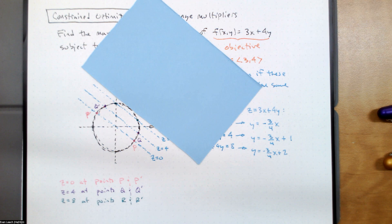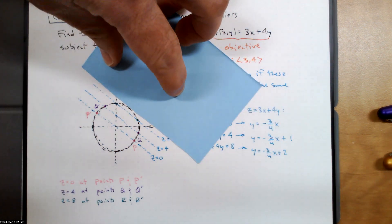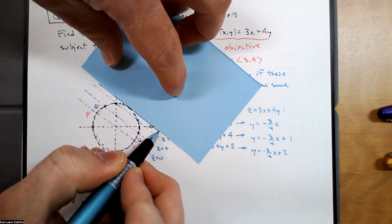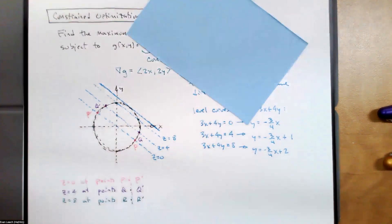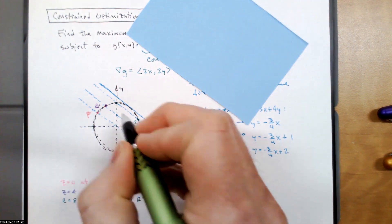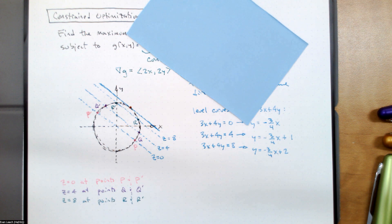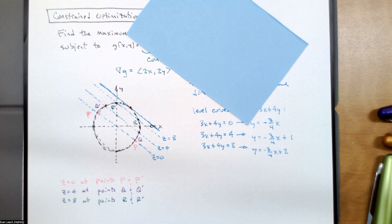We keep getting higher values as long as I keep moving these — looking for a level curve that's further away. But then we have to stop. It's kind of like when these two points slam into each other and there's only one point of contact between the line and the circle. We know we're going to get to a point where we get just one point of contact between the level curve and the constraint. After this, we will not get any more values that are higher because we'll be off the constraint.